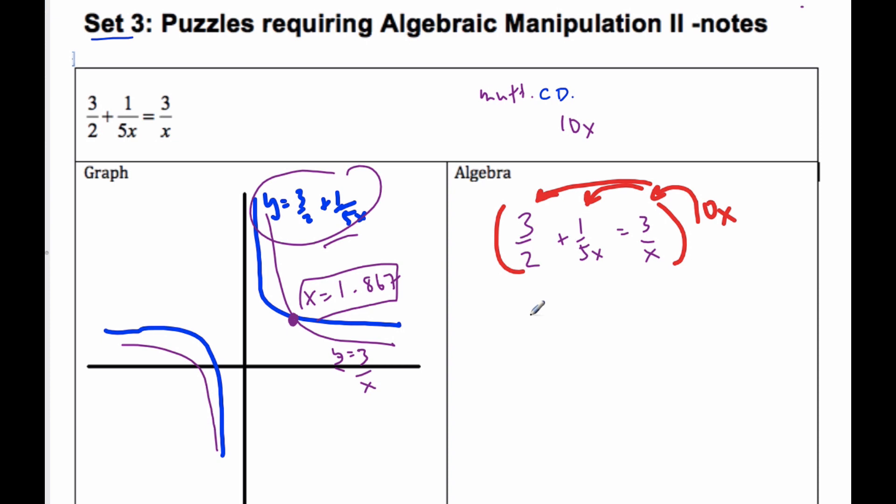So when I do that, I get 10x times 3 over 2, plus 10x times 1 over 5x is equal to 10x times 3 over x.